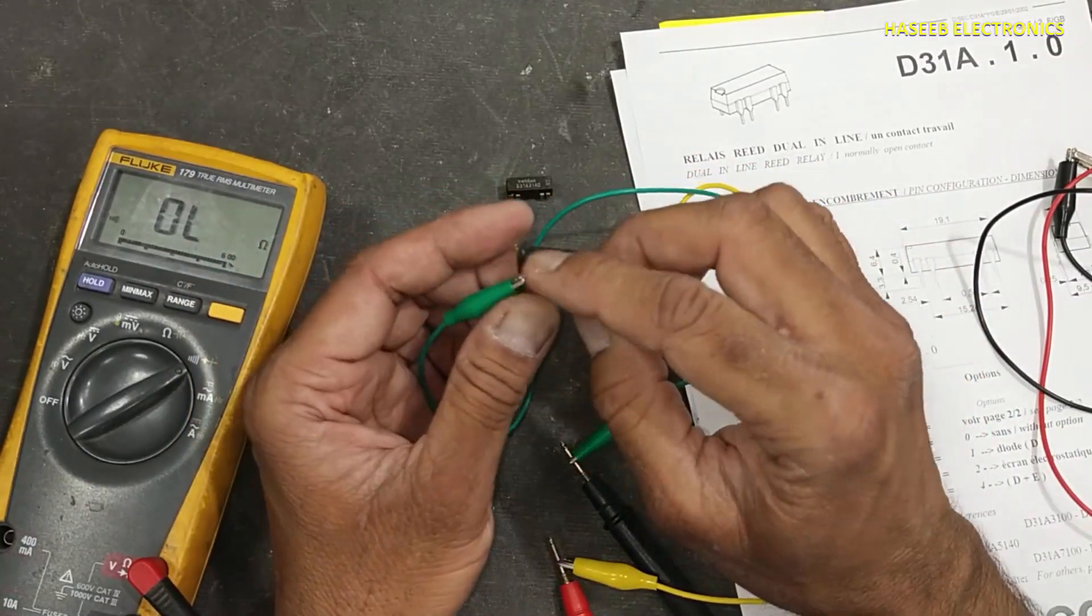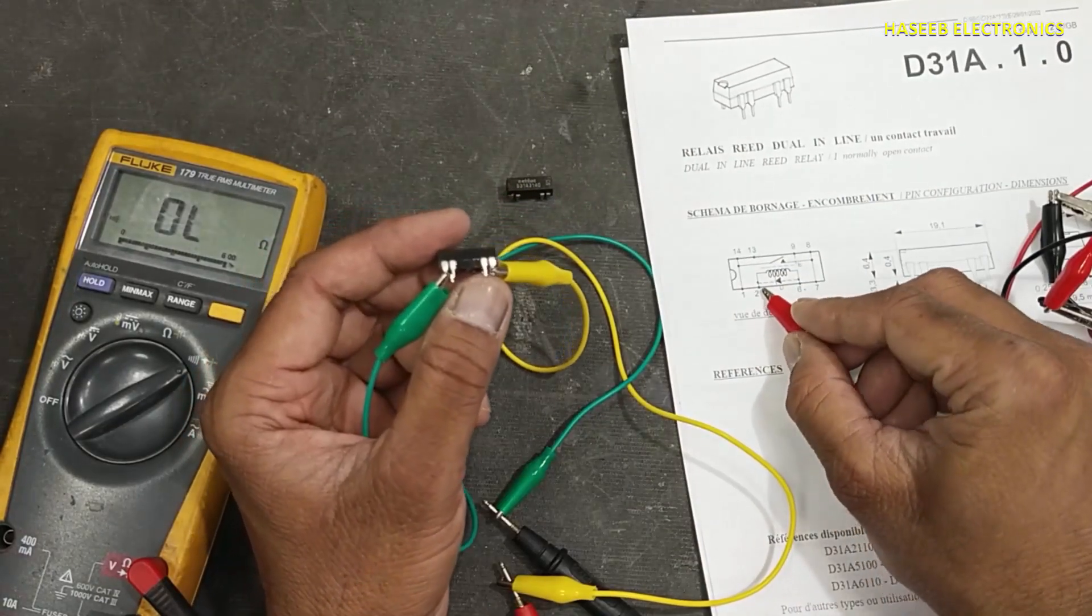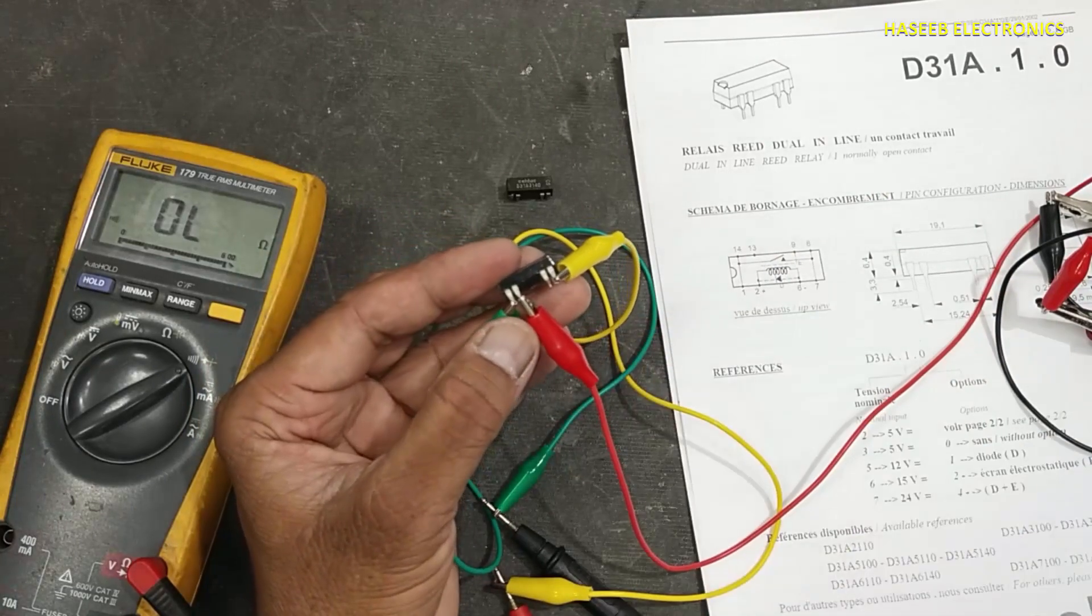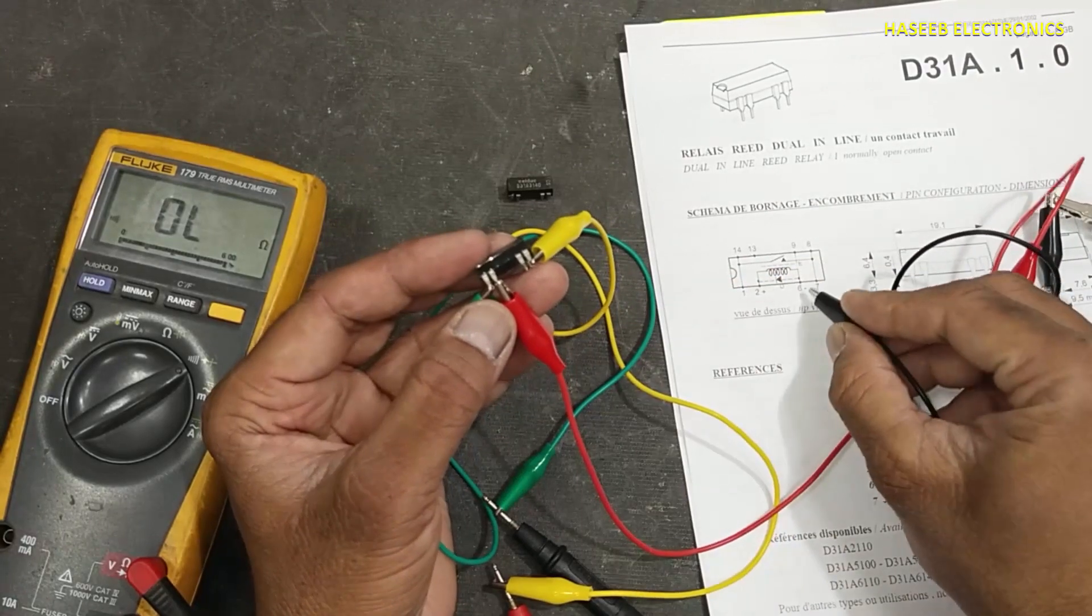This time it is open. I will apply positive 5 volts to pin number 2, and I will apply the return line to pin number 6.